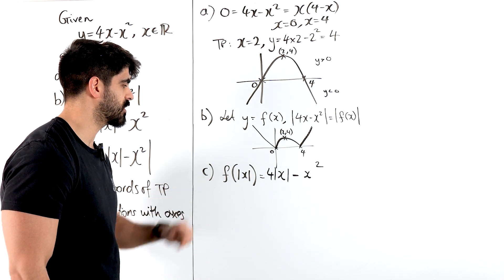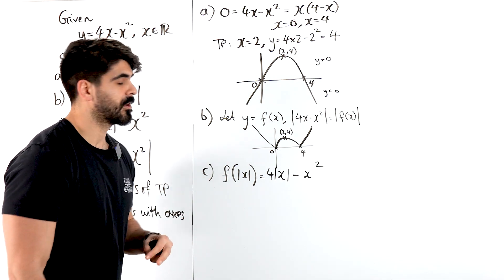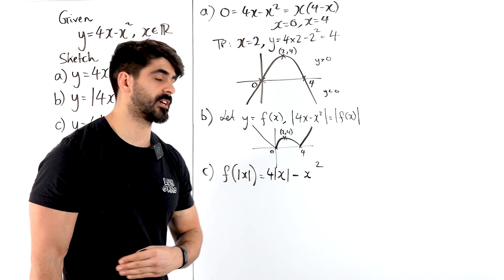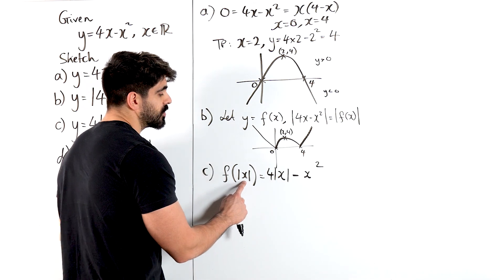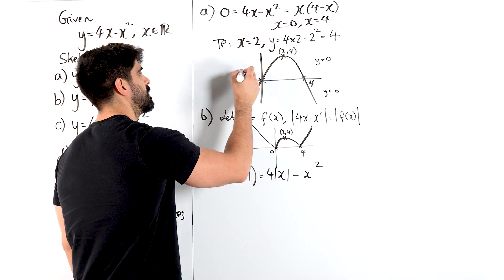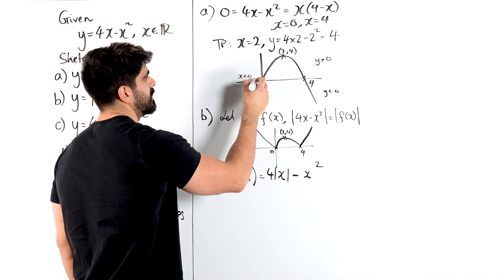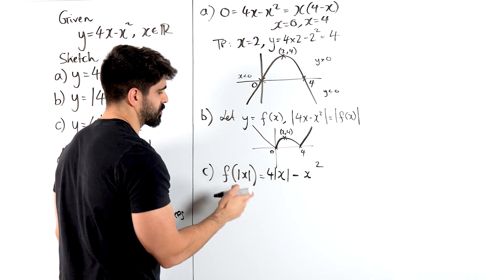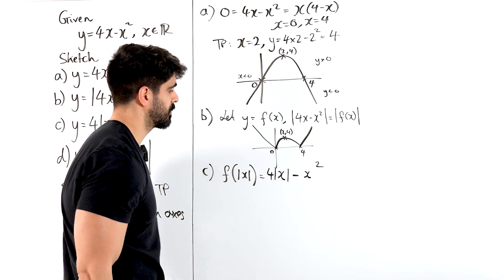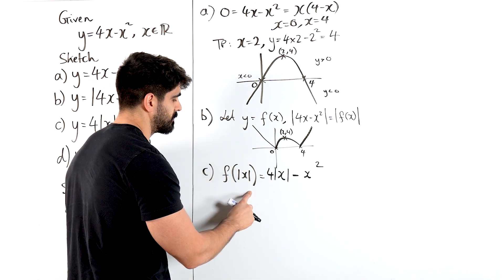So all we're doing here is we're sketching f of mod x. Now what is that transformation? That transformation is all positive x values get reflected into the negative side because you're modulusing the negative x values. Meaning over here, can you see where x is negative? So here x is negative. If you take x is minus 1 and put into here, the modulus of minus 1 is 1. So you're actually doing f of 1.